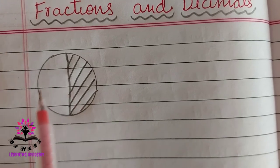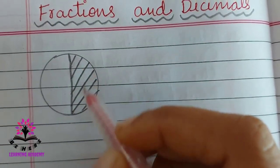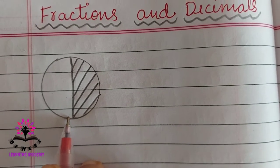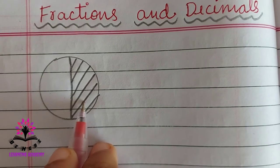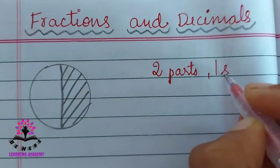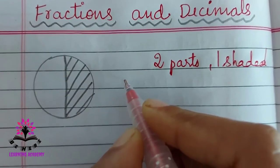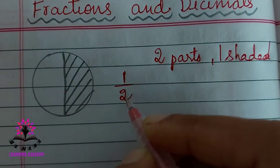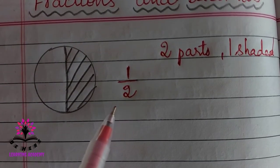You see this circle here. This circle is divided into two parts by a line, and one part of this circle is shaded. To represent this as a fraction, you have to see how many parts there are — there are two parts, and one part is shaded. So you write the shaded part as one and total number of parts as two. The fraction is one by two.